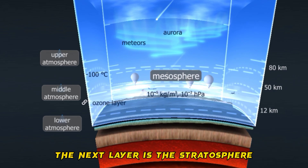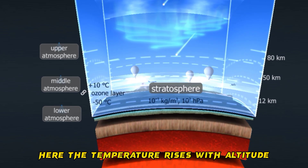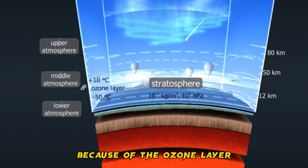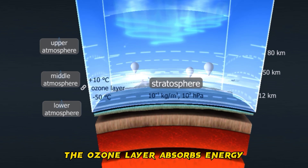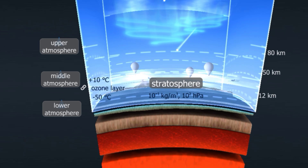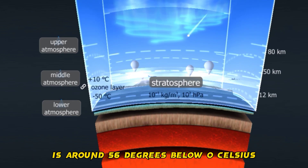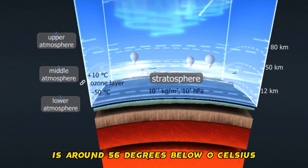The next layer is the stratosphere. Here, the temperature rises with altitude because of the ozone layer. The ozone layer absorbs energy; consequently, its temperature rises. The temperature at the lower boundary of the stratosphere is around 56 degrees below zero Celsius.